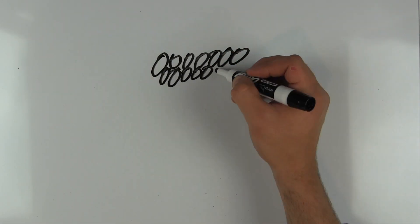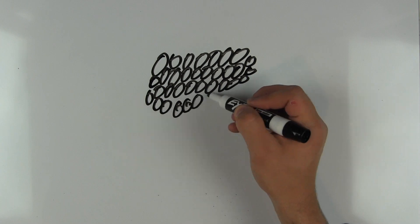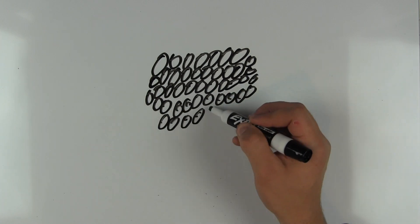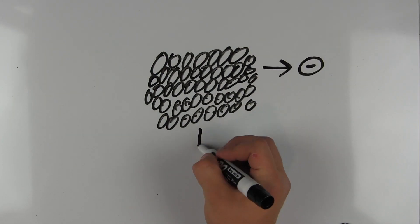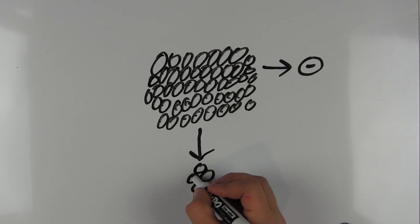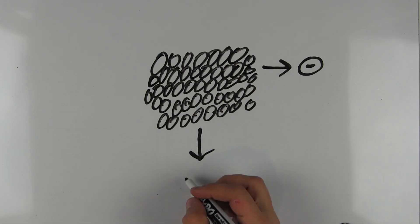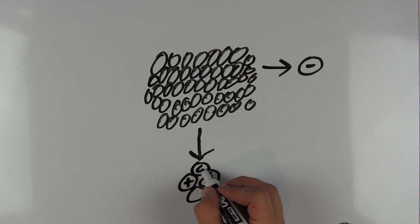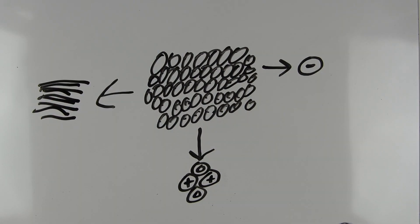The uranium atom loses this weight by releasing beta particles, which are high-speed electrons, alpha particles, which consist of two protons and two neutrons and have a positive charge — this is also the same as the nucleus of a helium atom — and they also release gamma rays.